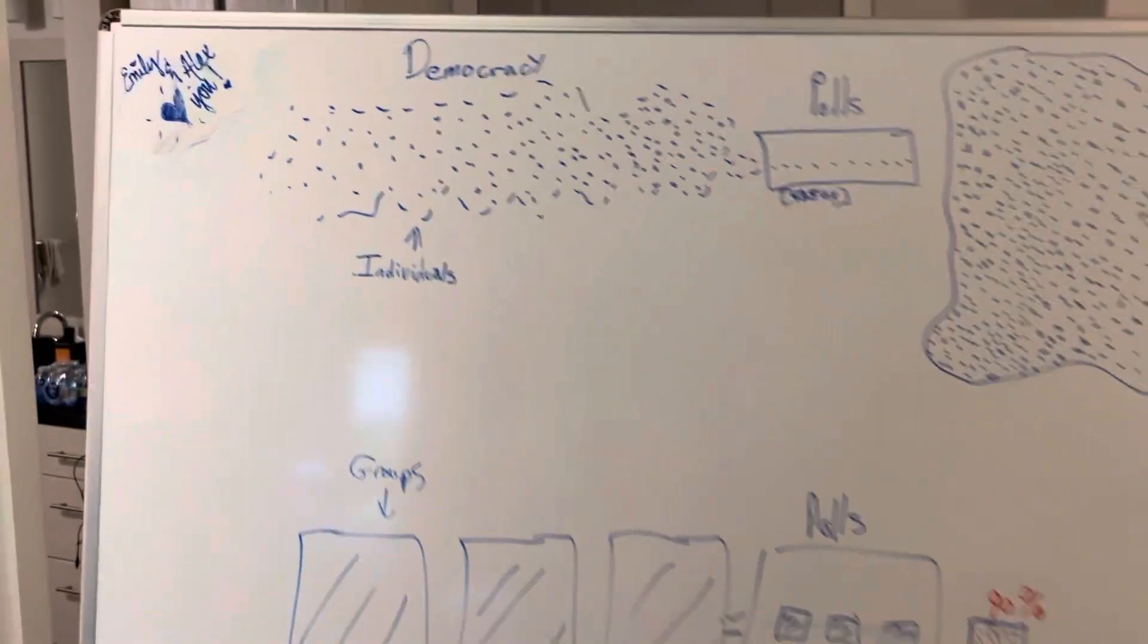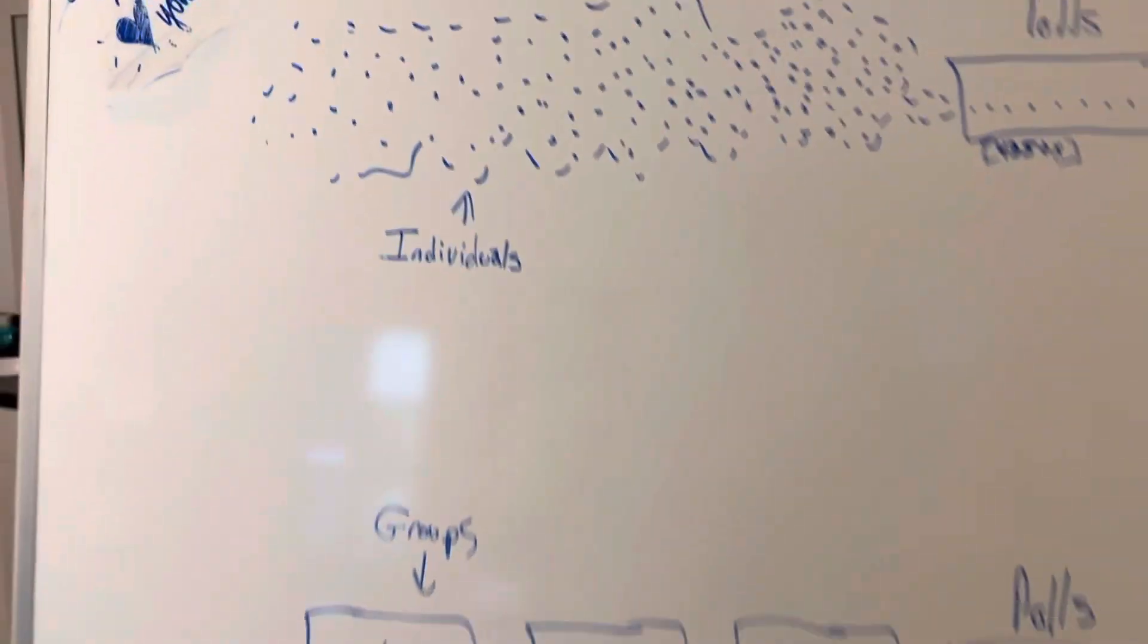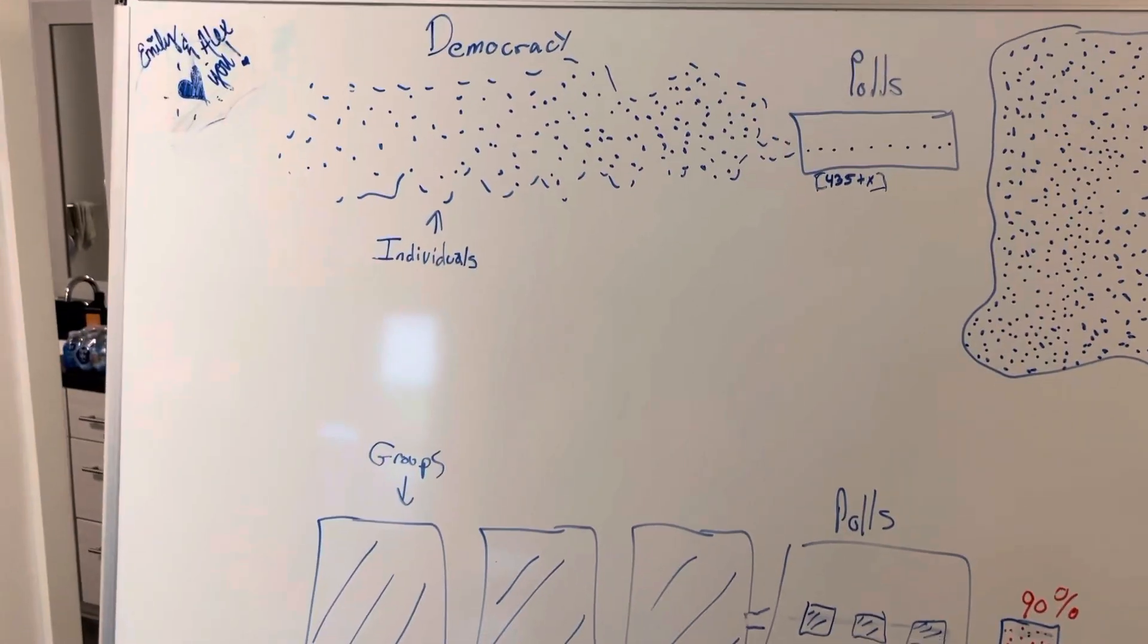All right, I thought we'd make another Mr. Nobody video. We're going to look at the word democracy. Specifically, we're going to look to see if we are individually franchising.